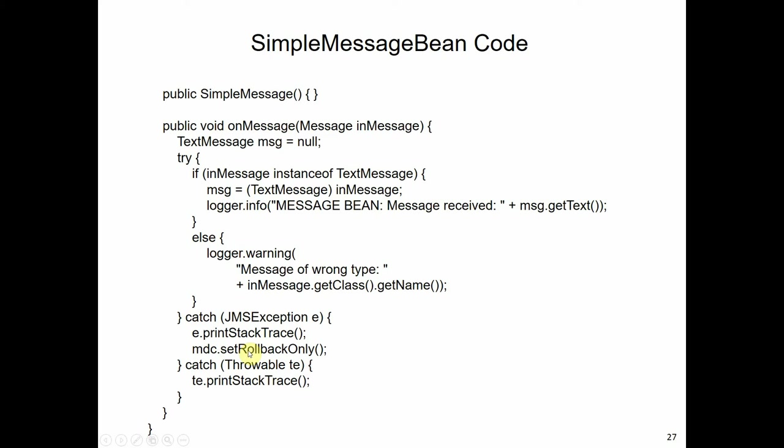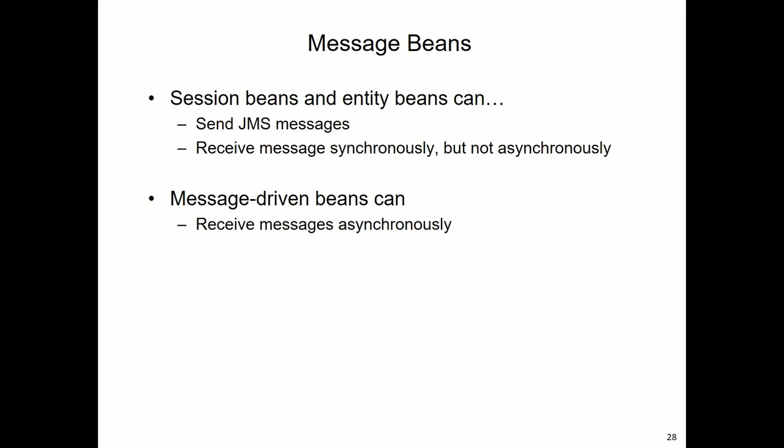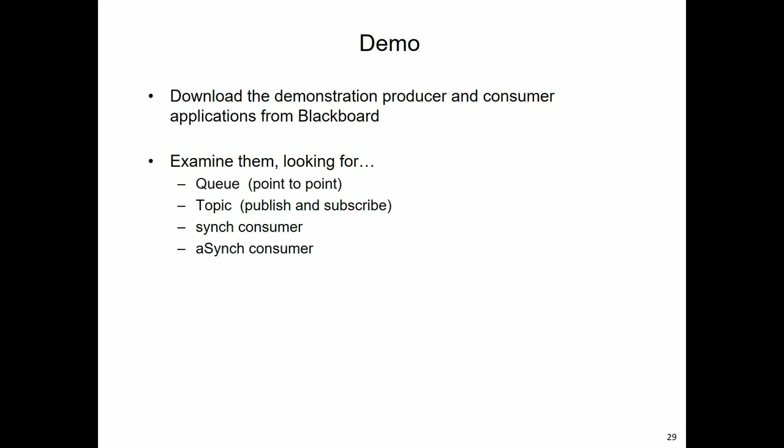In concept it's fairly straightforward - what you actually do with the message will depend entirely upon the business rules. Session beans and entity beans can both send JMS messages and can receive messages synchronously, but they cannot receive them asynchronously. Message-driven beans can receive messages asynchronously. So if you're in the business of needing asynchronous messaging, you will need to make use of message-driven beans instead of session beans or entities. You can download the demonstration projects from Blackboard - please take a look at them to see how the queues and topics work, and how you set up synchronous and asynchronous consumption.